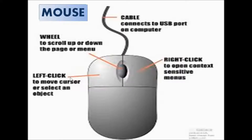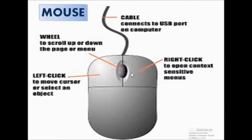The mouse has mainly two buttons — left click and right click. Left click is used to select any file or folder. Right click is used to open any file or folder. There is also a scroll wheel or scroll button, which is used to scroll up or down.